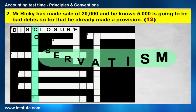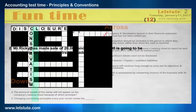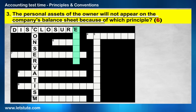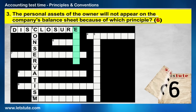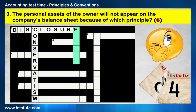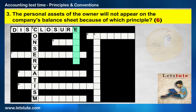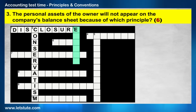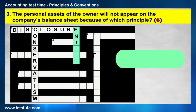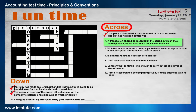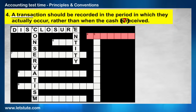Then we have the third one, also down: The personal assets of the owner will not appear on the company's balance sheet because of which principle? Think faster. Yes — the entity principle.